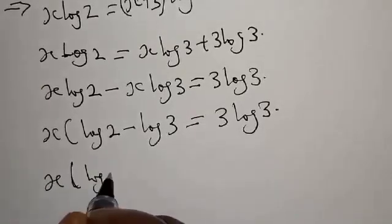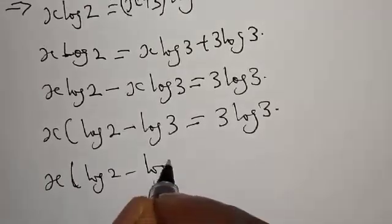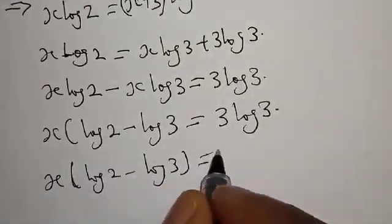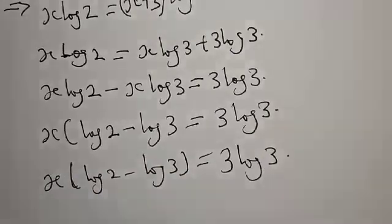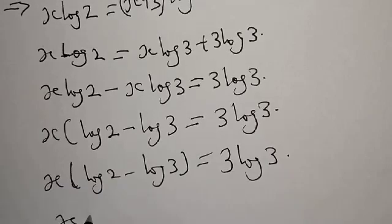x log 2 minus log 3, this equals 3 log 3. Then this can be written as x into log 2 over 3.